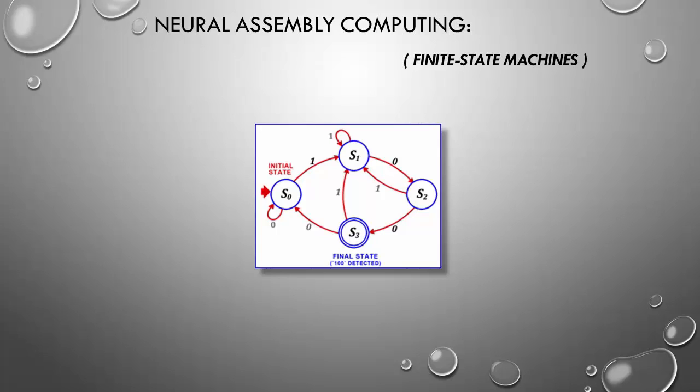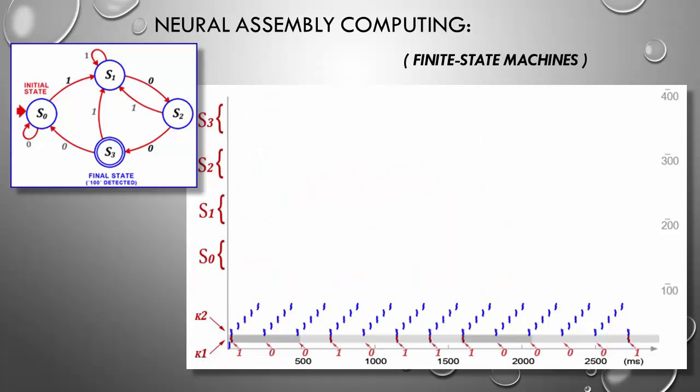Let's see this finite state automaton in neural assembly computing. In this raster plot, we see firstly the rhythm for this network. The assembly K2 triggers K3, which triggers K4, which triggers K2 back. And it repeats while we are executing this automaton. Every time the K2 assembly fires, the network inserts an external stimulus. This stimulus can be 1 or 0. If 1, the assembly K1 fires. Otherwise, it remains silent.